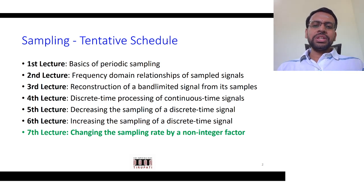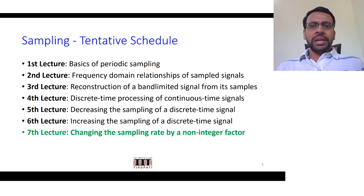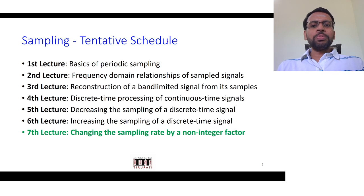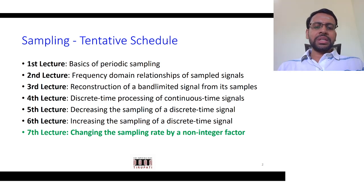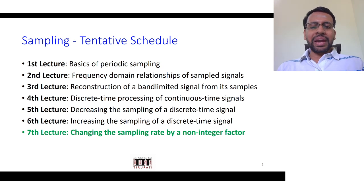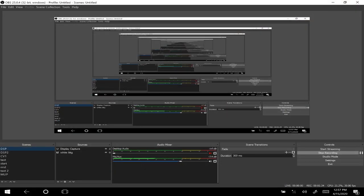In the first lecture, the basics of periodic sampling are discussed. Second, when you sample a continuous-time signal, the frequency domain relationships are discussed. Third, given a discrete-time signal, how do you reconstruct back the continuous-time signal. Fourth, the relationships between the continuous-time Fourier transform and the discrete-time Fourier transform are discussed. Then how to decrease the sampling rate of a discrete-time signal, followed by increasing the sampling rate.